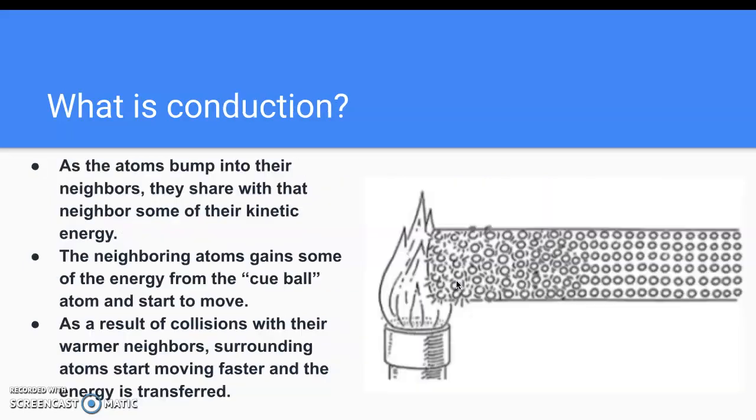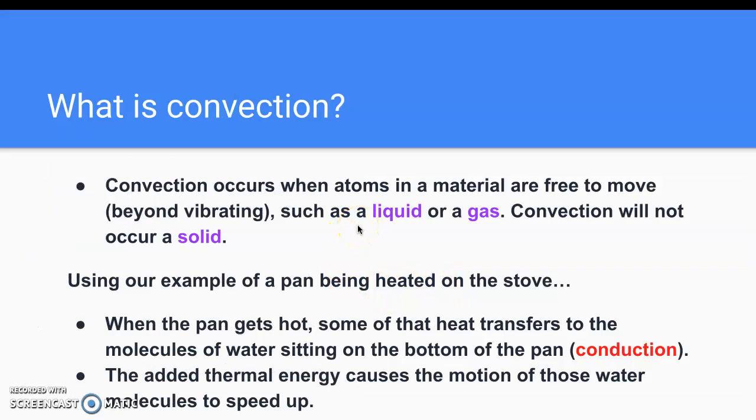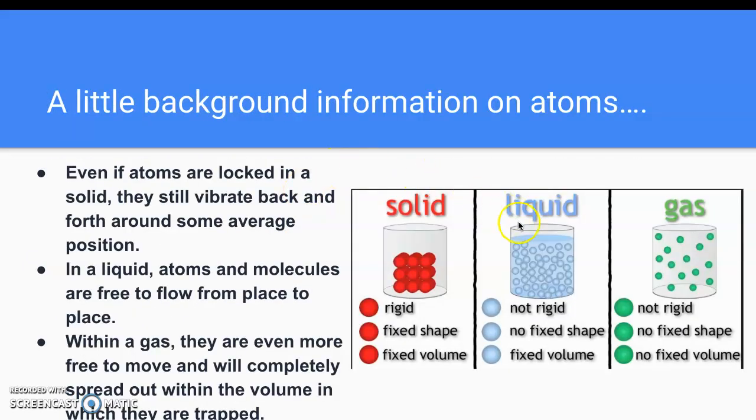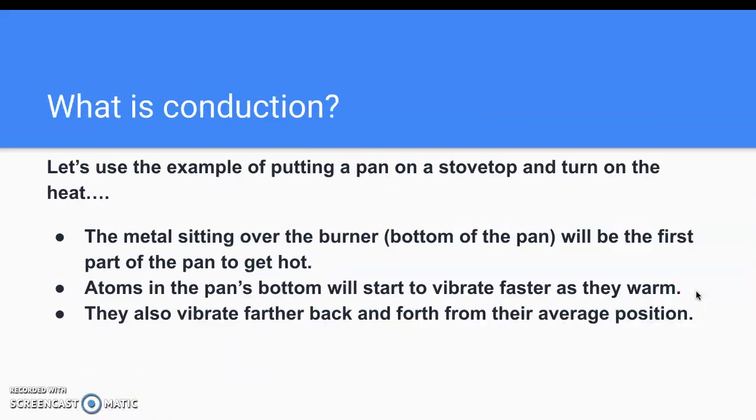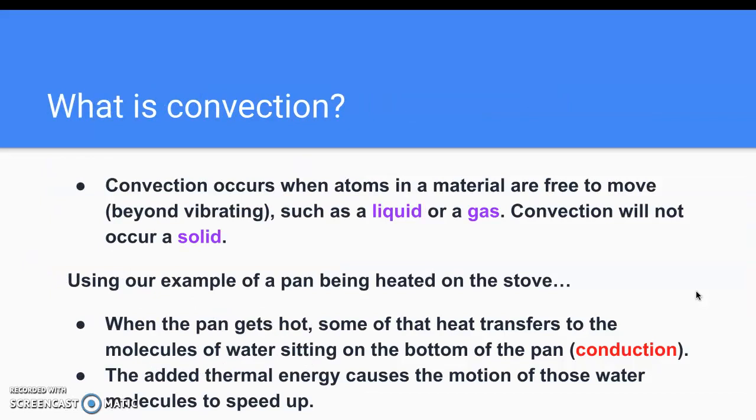Convection. So conduction, you have to have the two objects touching, meaning the hotter area or space has to be touching with the cooler area of space in order for this transfer to occur via conduction. Convection has to do with atoms or molecules that are in a fluid. And by fluid, we don't just mean liquid. We mean liquid or gas. Fluid meaning a substance where atoms and molecules can move around. And if you think back to our images here, in both the liquid and the gas, these atoms and molecules are moving around.